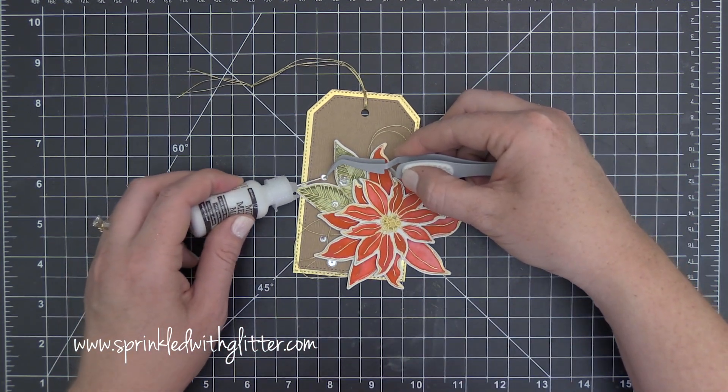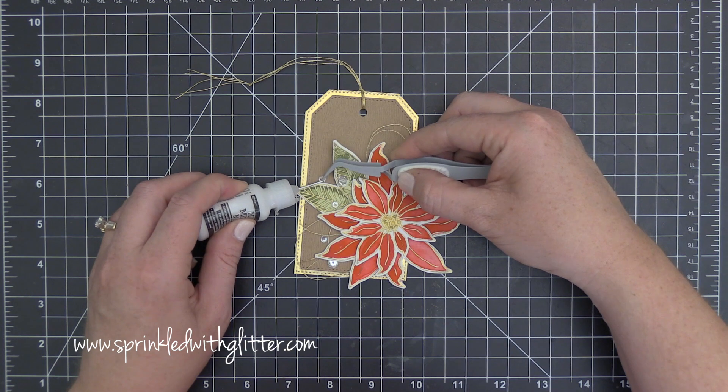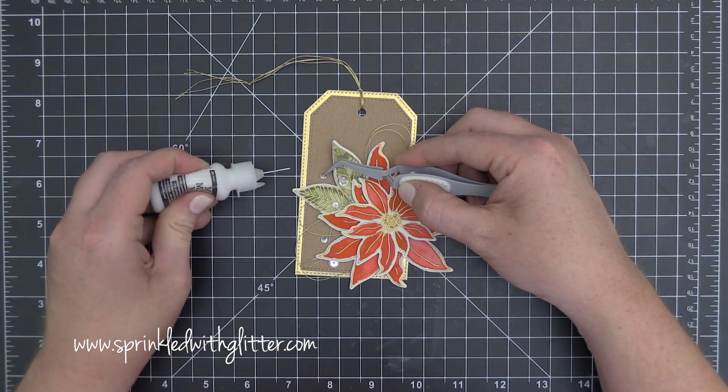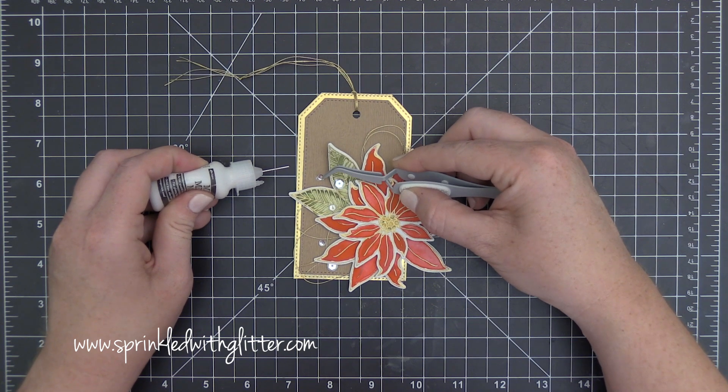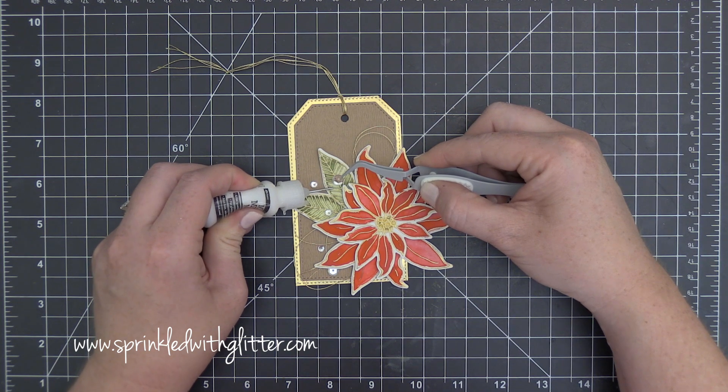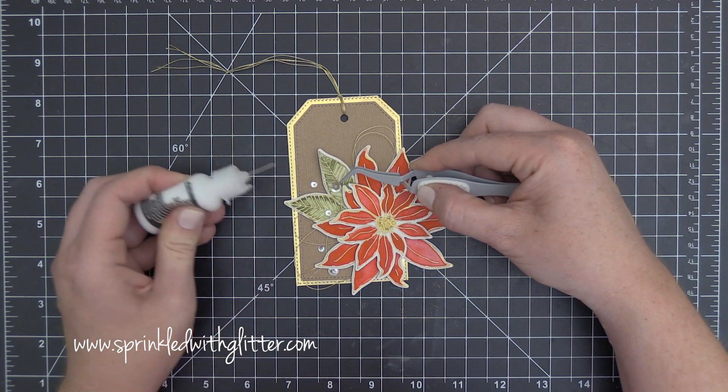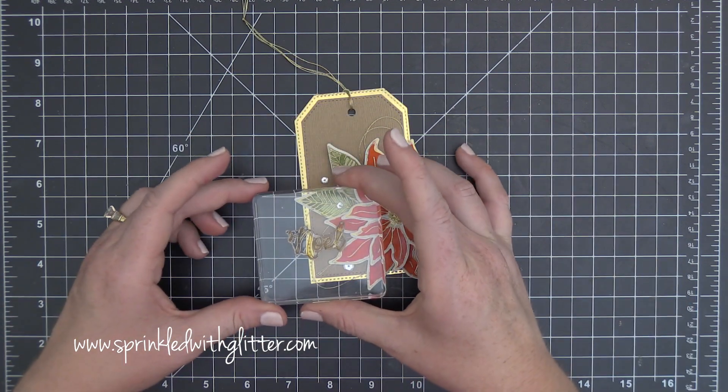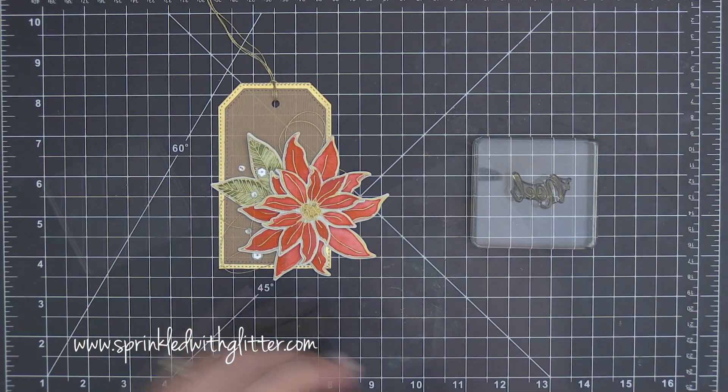Now of course no Christmas project would be complete without a little bit of sparkle so I decided to add some of the sparkling clear sequins from Pretty Pink Posh. It's a mixture of the four millimeter and the six millimeter sequins and I'm just attaching those on with a little of the Ranger multi-medium in the matte finish. That just gives it a little bit of sparkle without taking too much away from that beautiful poinsettia that I've created.